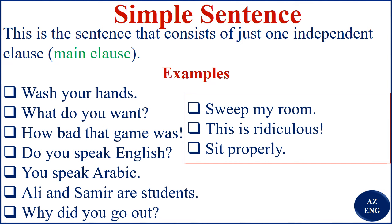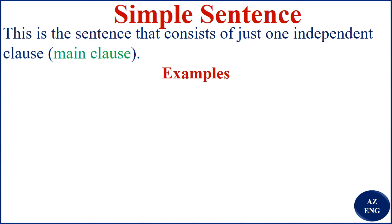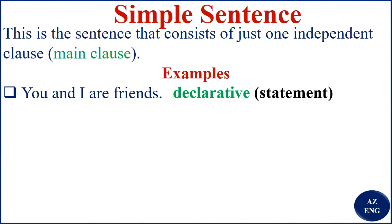I hope the examples were enough to make you understand what a simple sentence is. Now we'll take each example and identify what type it is — for example, 'Wash your hands' or 'What do you want?' When making a sentence, you make a statement, ask a question, give an order, or make an exclamation. 'You and I are friends' is a declarative sentence — that is, a statement.